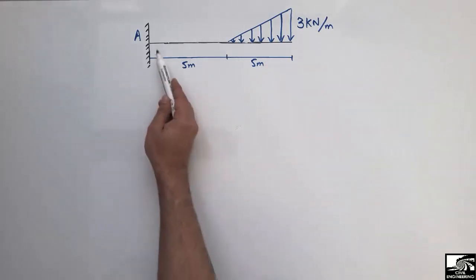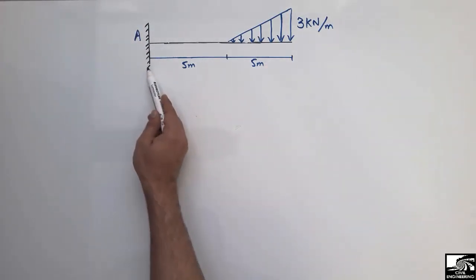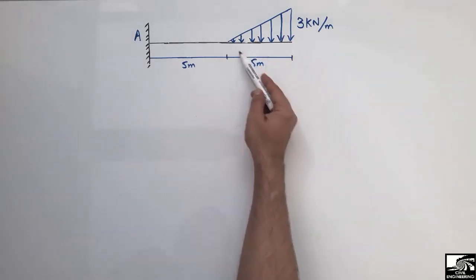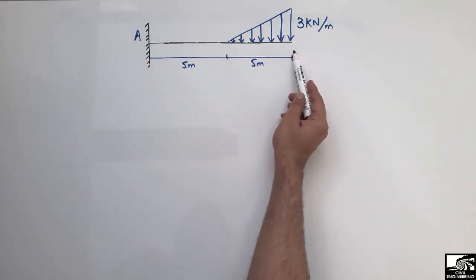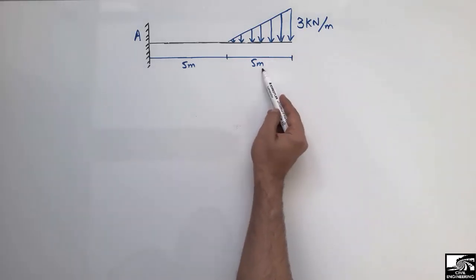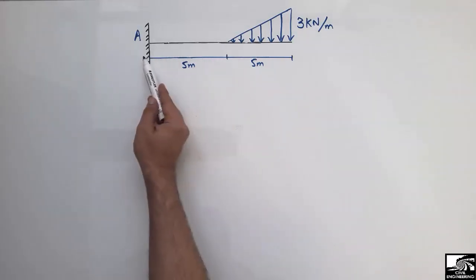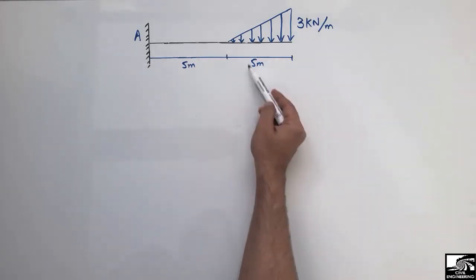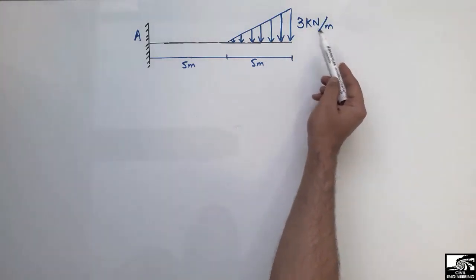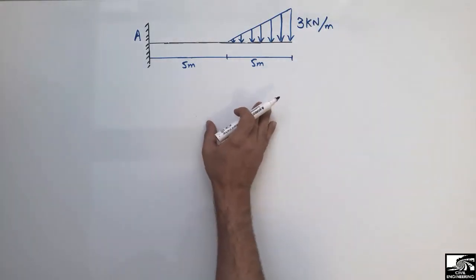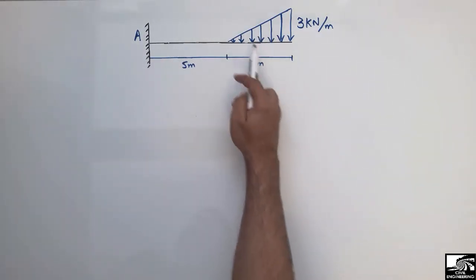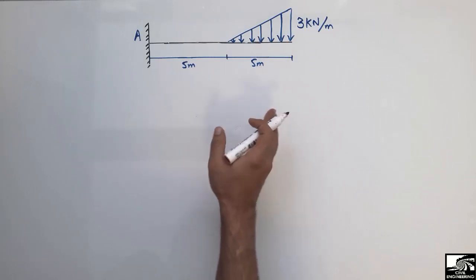This is a cantilever beam with only one fixed support on the left end. There is a triangular load acting on the right side of the beam. The total length of the beam is 10 meters — for the first 5 meters from the left there is no load, and for the last 5 meters there is a triangular load of 3 kN/m. We have to draw the shear force and bending moment diagram for this type of loading.